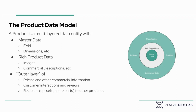Around that core, there's a layer of rich product data. So that could be images, commercial descriptions, copywriting, SEO descriptions, et cetera. And then outside of that is an outer layer of the product data model — of product information. That outer layer consists of pricing and other commercial information. It could be customer interactions, customer reviews that they upload through your e-commerce platform. And it could consist of relationships — so upsells, spare parts to other products, sets, et cetera.